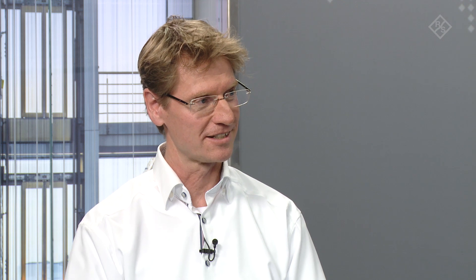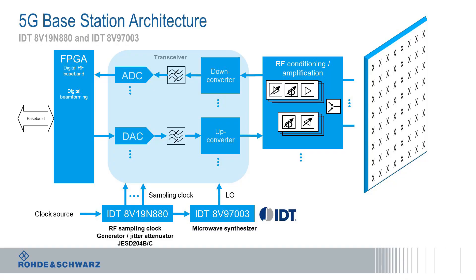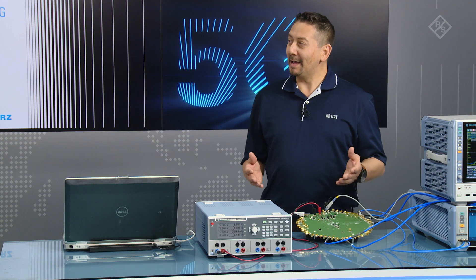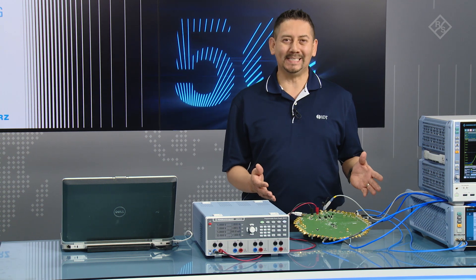Steve, I see on the board many, many connectors with many signals. What about the time alignment of these signals? Time alignment is absolutely critical for a system of this size. The 8V1NN880 has 18 outputs and it provides these clocks to the ADCs and DACs. The alignment is done through the JESD204B standard.